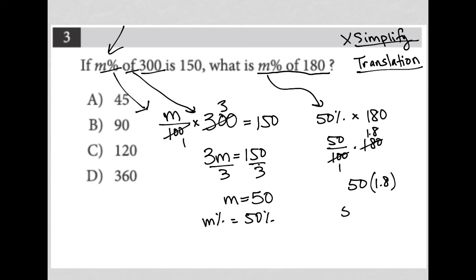In fact, I'm going to just do the math here. 50 times 1.8, 8 times 0, 8 times 5 is 40. 1 times 0, 1 times 5. So that's 900, but we have a decimal place movement, so we go there. So the answer here is 90.